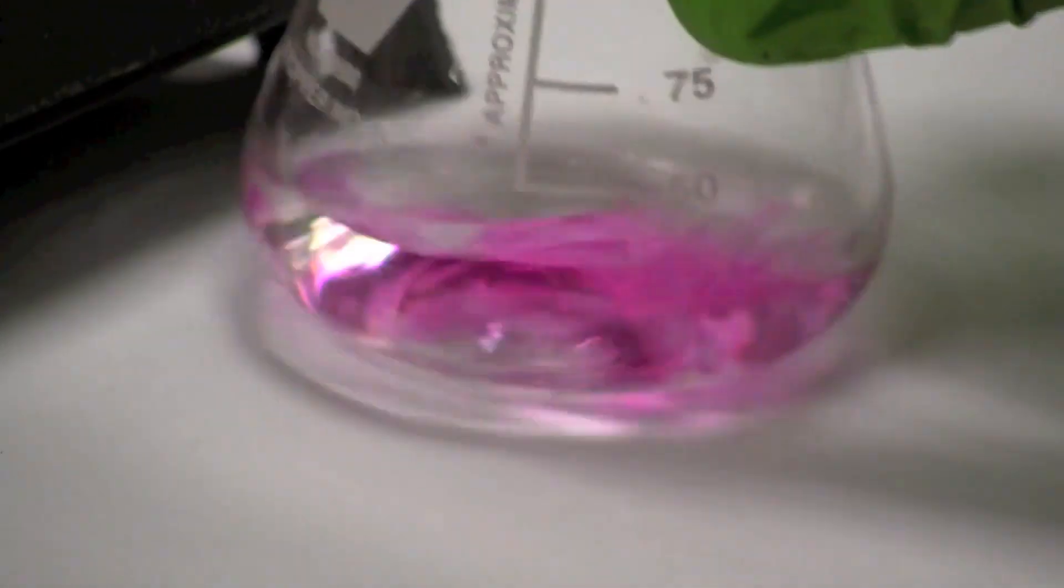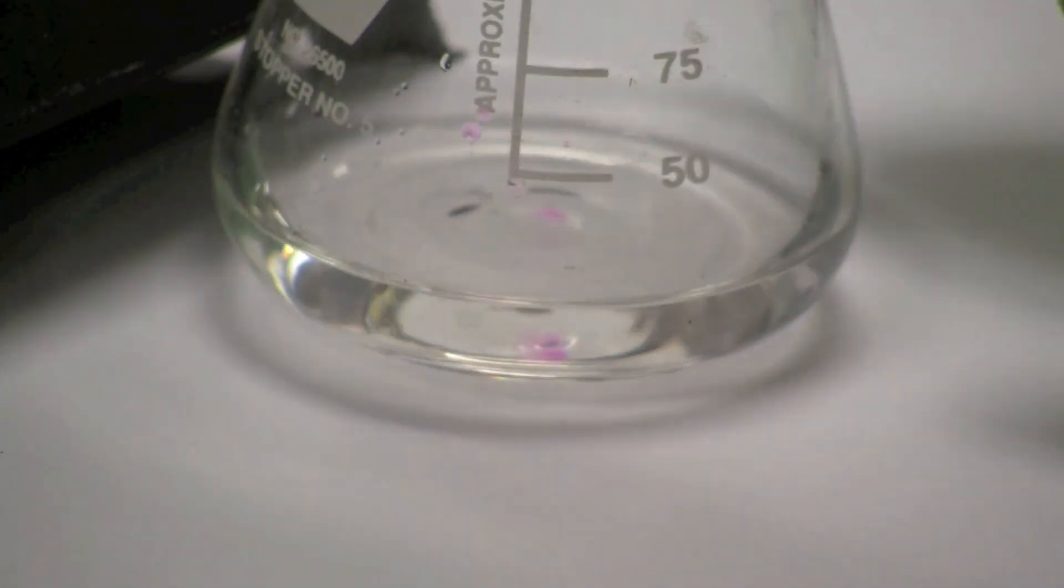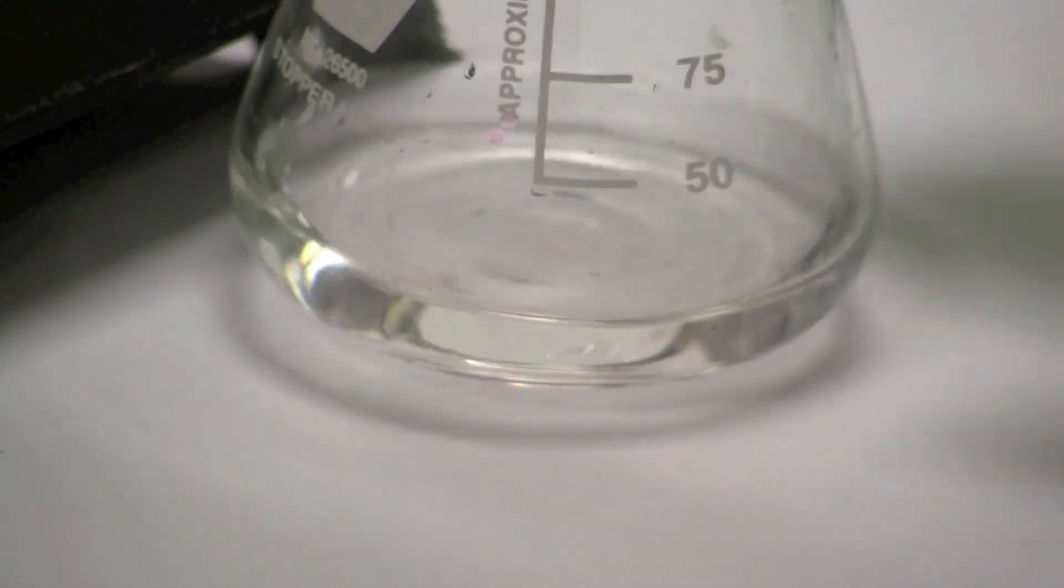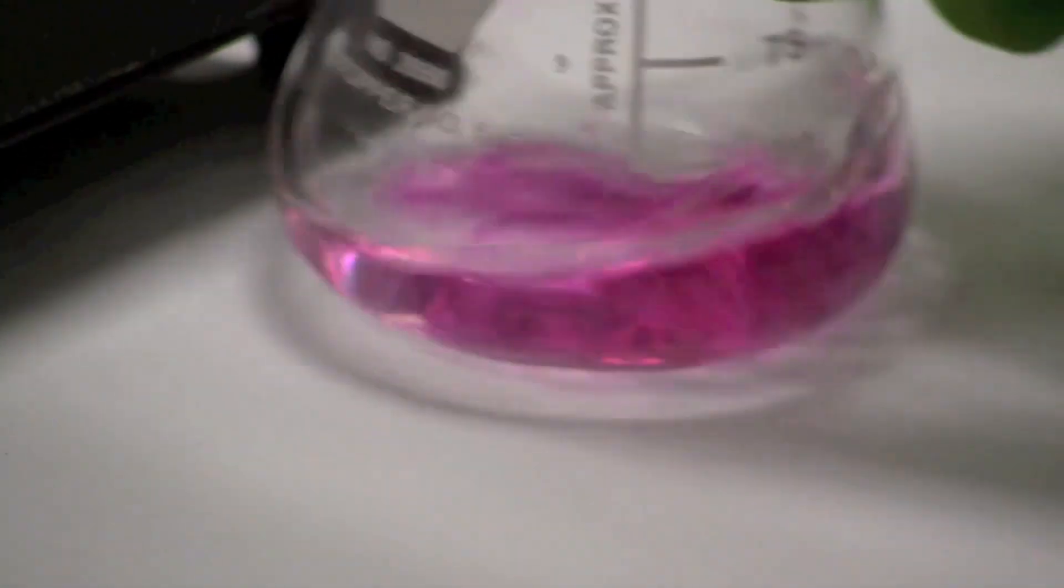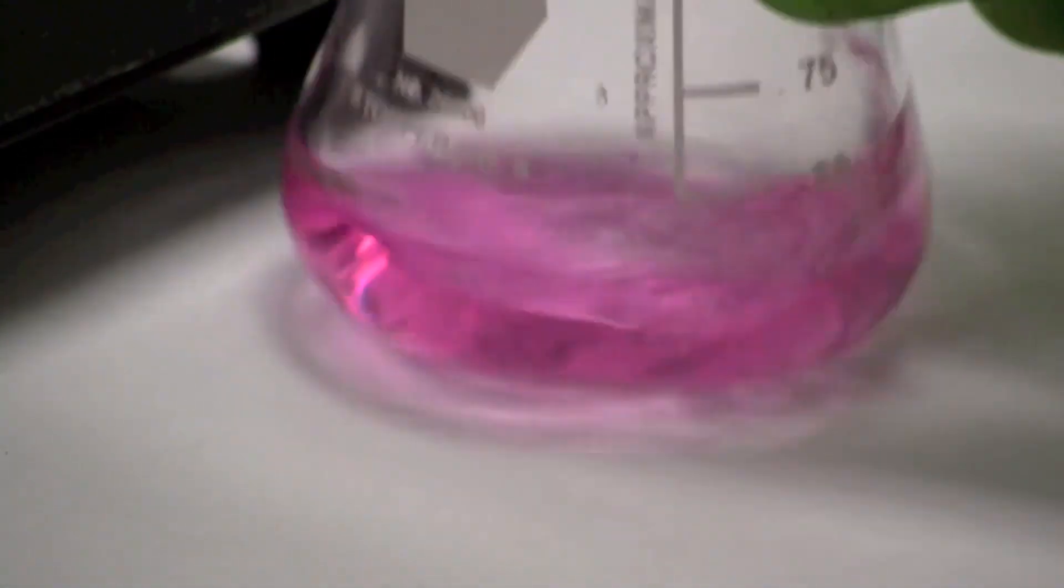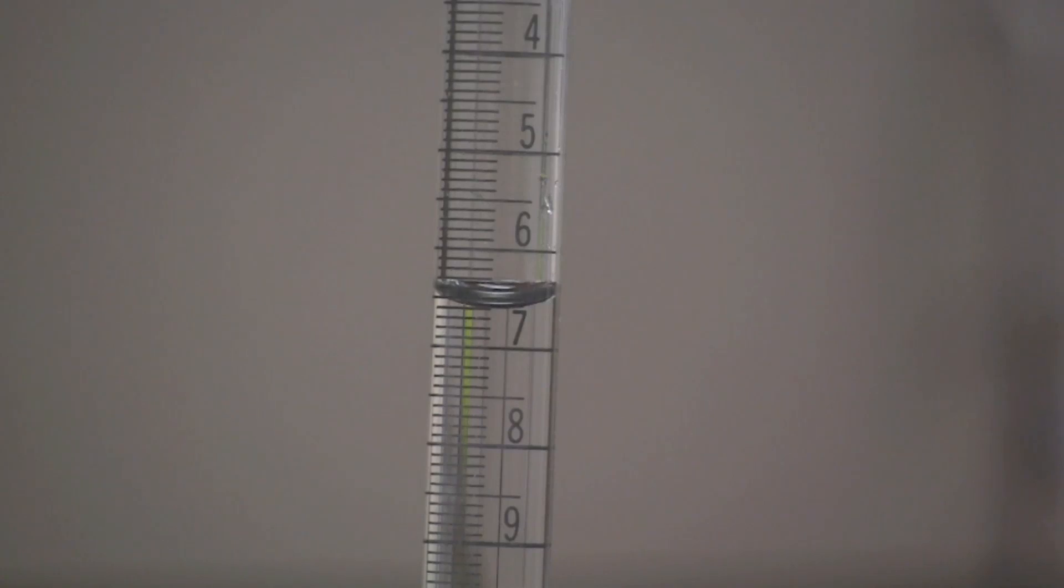Then add the sodium hydroxide solution in single drops, making sure that each drop is thoroughly mixed before adding the next. Continue to add sodium hydroxide one drop at a time until the hydrochloric acid solution stays pink, indicating that the acid has been neutralized.